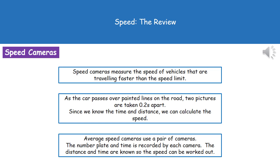What happens is as that car passes over those painted lines, you get two pictures taken by that speed camera which are 0.2 seconds apart. Those lines on the road are a set distance apart, and since we can count how many lines the car's gone over, we know how far it's gone. We know the time because the two pictures were taken 0.2 seconds apart.